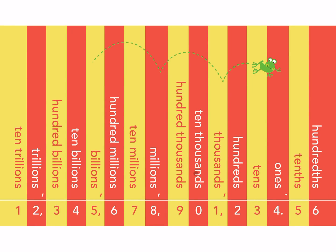Take a look at this place value chart. Remember, when I move to the left, each place value to the left is ten times larger than the one before it. When I move to the right, the place values get one-tenth, or ten times smaller, than the place value to the left of it.